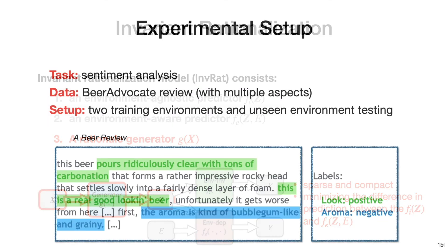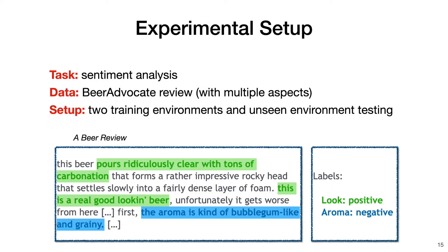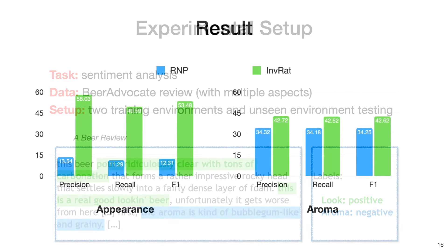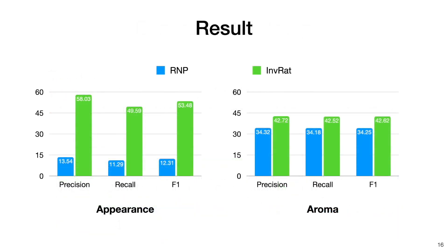To evaluate how well this framework works, we perform an experiment on the beer review dataset, where the task is to predict the sentiment of a particular aspect. The environments are partitioned according to different degrees of correlations among the aspects. This result compares the rationale alignment with the human-selected explanations.